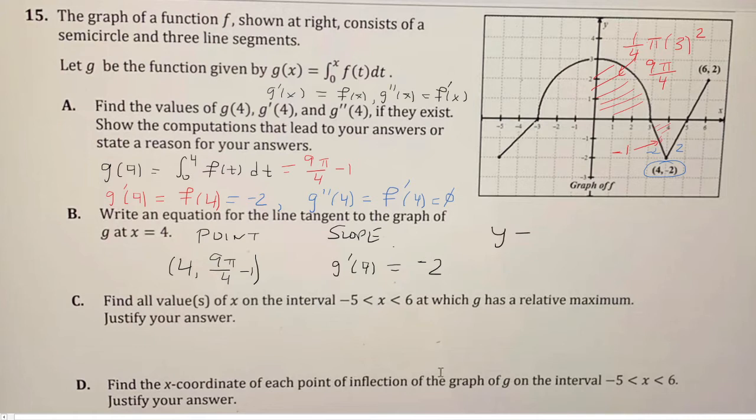So now we just do the point slope. It's y minus y1 equals the slope times x minus 4. And I'm just going to leave it like this.